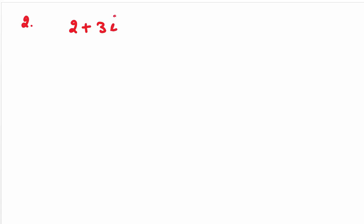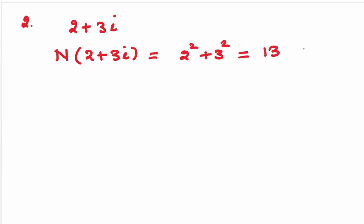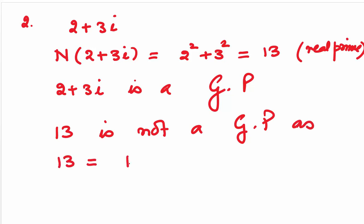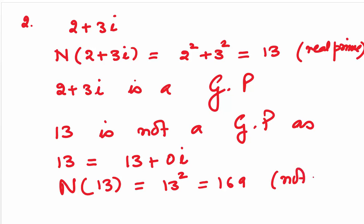Let's look at another example: 2 plus 3i. Is this a Gaussian prime? N(2 plus 3i) equals 2 squared plus 3 squared, which gives us 13. Since 13 is a real prime, 2 plus 3i is a Gaussian prime. But what about 13 itself? Since 13 is written as 13 plus 0i, its norm is 13 squared which is 169 — not a prime. So 13 is not a Gaussian prime, confirming that the converse is not true.